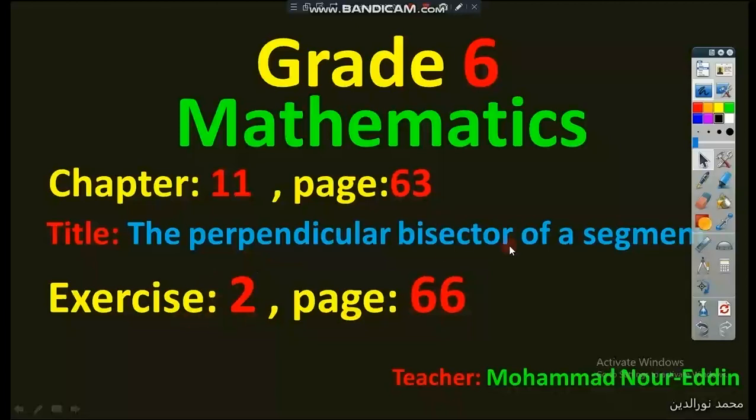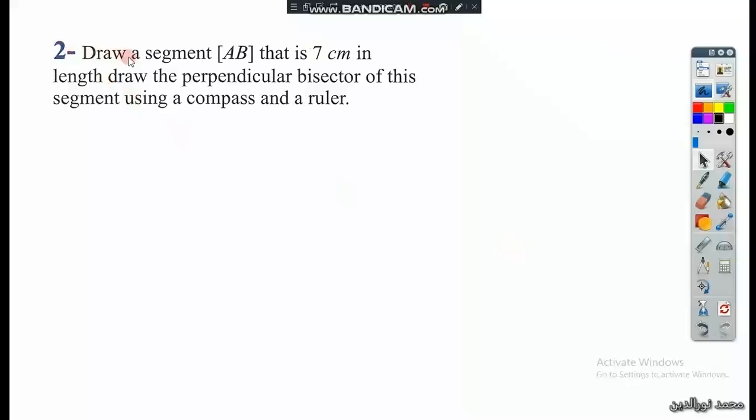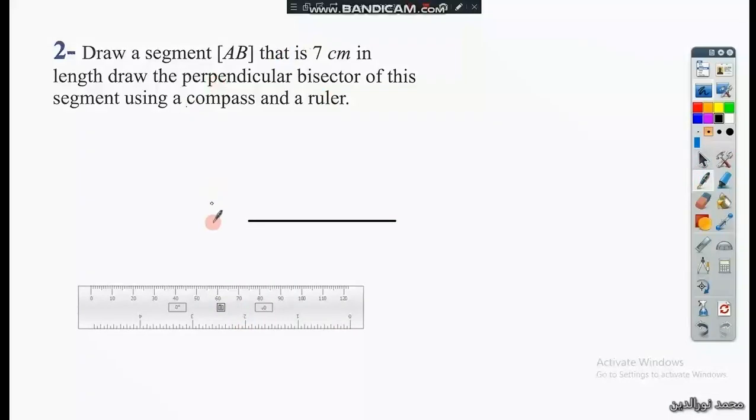Exercise 2 on page 66: draw a segment AB that is 7 centimeters in length and then draw its perpendicular bisector using the compass and the ruler. So first of all, we have to draw the segment AB of 7 centimeters length. So this is the segment AB and it is 7 centimeters in length.